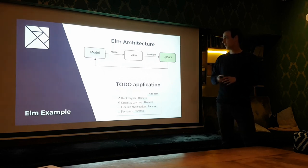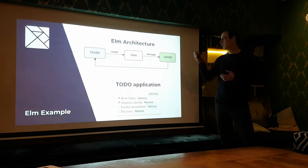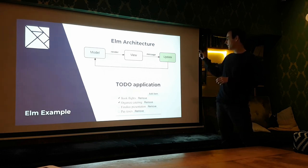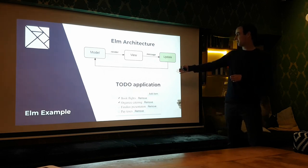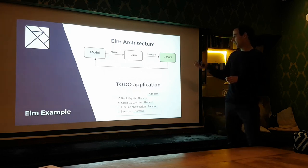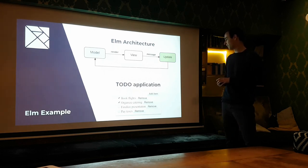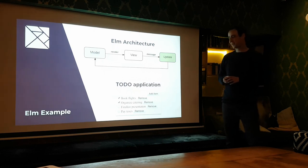The model-view-update architecture was especially developed for Elm. There is the model, which corresponds to the state of the application. The view is the way to render or display the state. And update is the way to update the state, which is triggered by a message. This is how our simple example application looks: it's a to-do application for managing tasks. A task can be added or removed, and its done state can be toggled. For the sake of simplicity, the design is completely omitted.